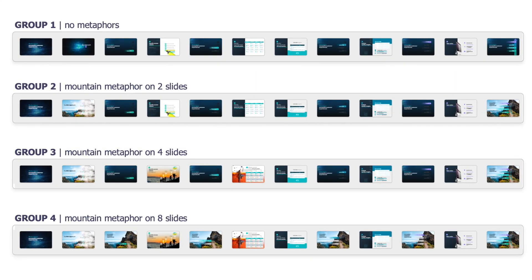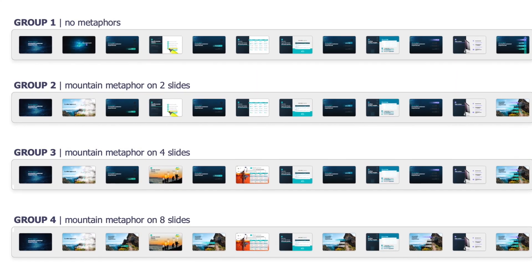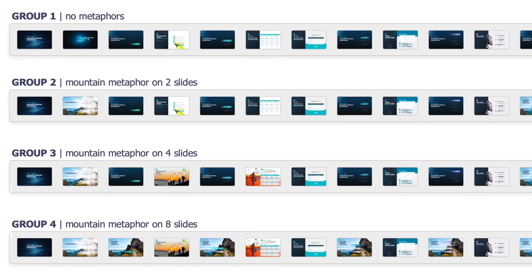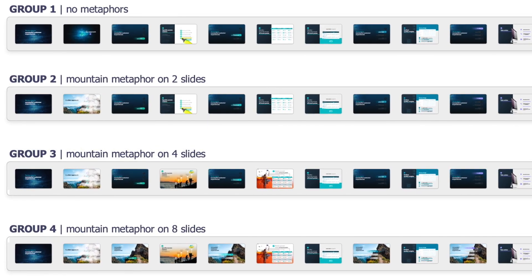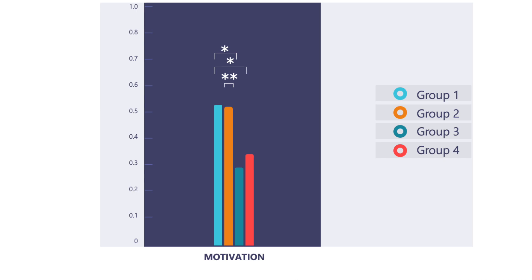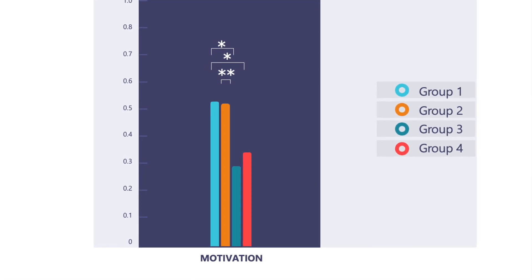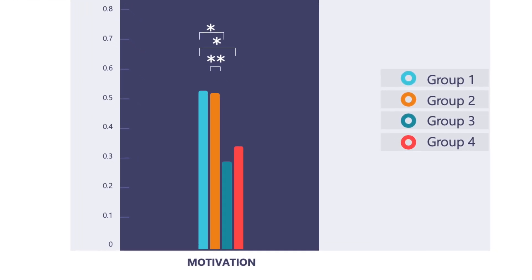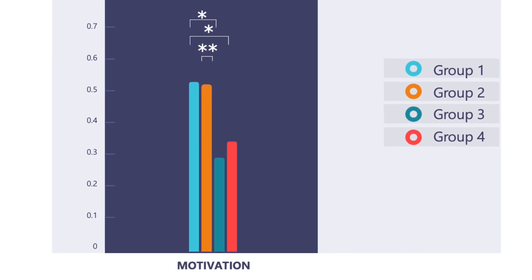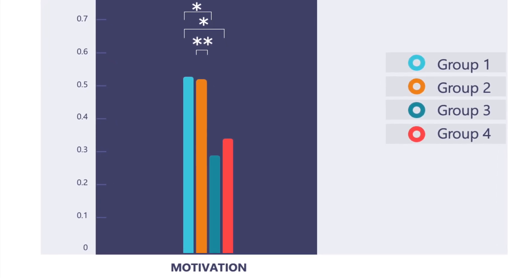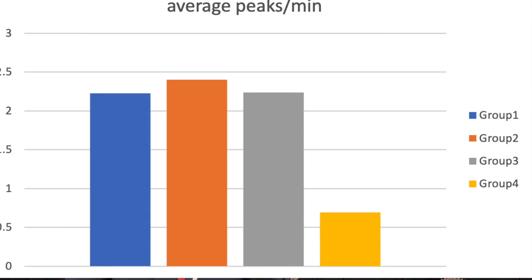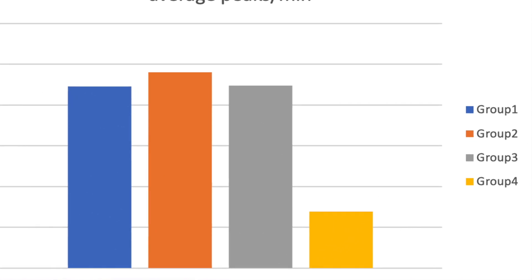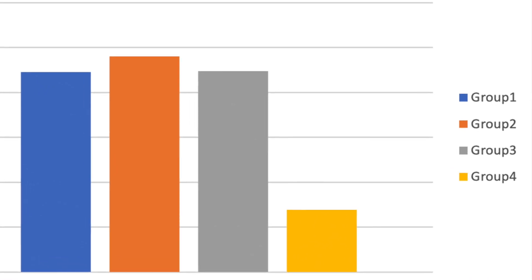In this study, Group 2 saw a mountain metaphor on 2 slides out of 12, Group 3 saw the mountain metaphor on 4 slides, and Group 4 saw it on 8 slides. The more we stretched a metaphor, the less motivated buyers were to keep processing the content, as indicated by their EEG signal. The stretched metaphor conditions also invited fewer reactions, as indicated by buyers' GSR signal.